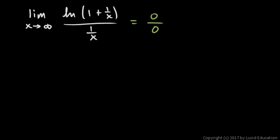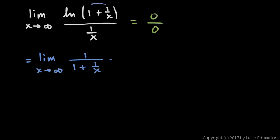Let's take the derivative of the numerator and the derivative of the denominator. This will be the limit as x approaches infinity of the derivative of the numerator. The derivative of the natural log of a function will be 1 over that function times the derivative of the inner function. So this will be 1 over 1 plus 1 over x, times the derivative of the inner function. Differentiating term by term, the derivative of 1 is 0, and the derivative of 1 over x is negative 1 over x squared — that's just the power rule: 1 over x is x to the negative 1, giving x to the negative 2, which is the same as positive x squared in the denominator.